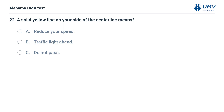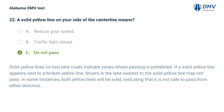A solid yellow line on your side of the centerline means: A. Reduce your speed. B. Traffic light ahead. C. Do not pass. Correct answer: C. Solid yellow lines on two-lane roads indicate zones where passing is prohibited. If a solid yellow line appears next to a broken yellow line, drivers nearest to the solid yellow line may not pass. When both lines are solid, it is not safe to pass from either direction.